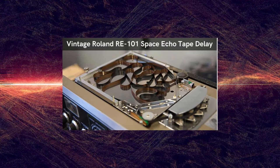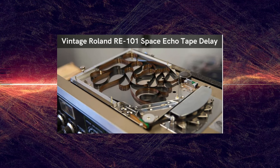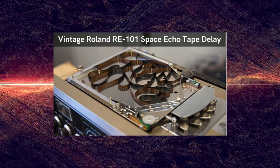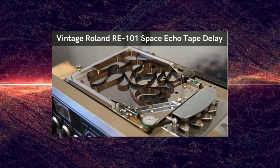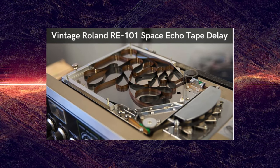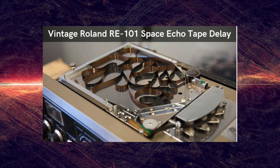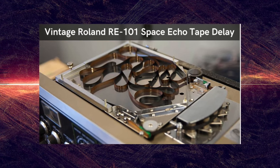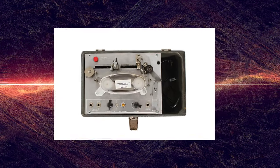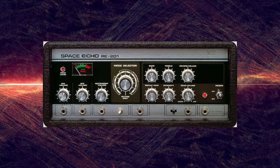By the 1960s and 70s, popular artists began experimenting with analog delay units to create interesting new sounds that fueled the psychedelic, progressive, and ambient genres. Some of the most popular examples of early tape delays are the Echoplex EP2 and the Roland RE-201 Space Echo.